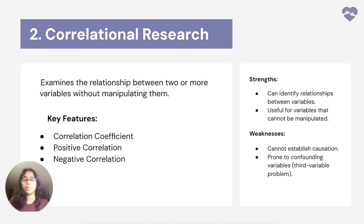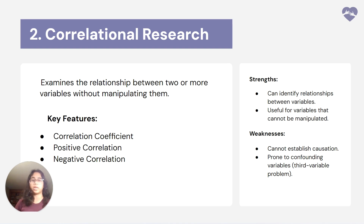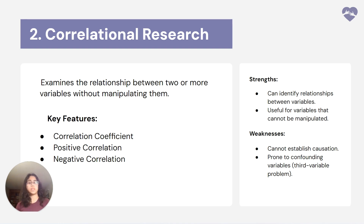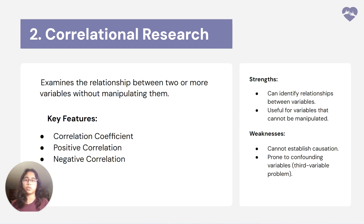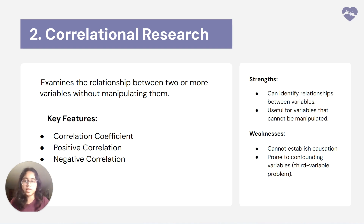Next we have the correlational method. This is when we look at the relationship of variables without altering them in any way. The key features are positive and negative correlation and finding the correlation coefficient. Compared to experimental, correlational and observational methods are probably harder to understand, so here's an example for correlation.